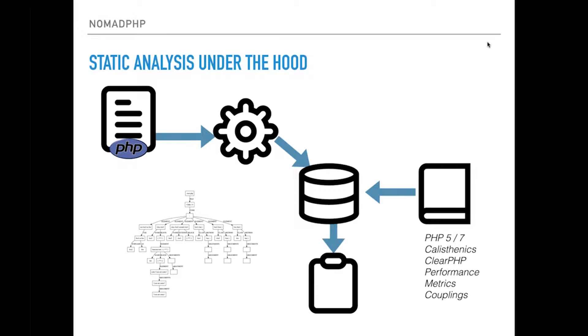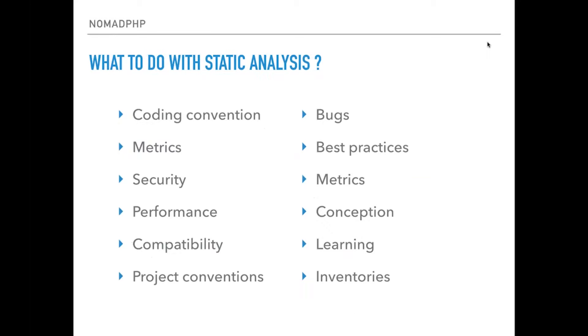So, instead of being so general, I suggest we take a look at a few of them, a few things you can do with static analysis. Coding conventions is probably the archetype of static analysis, because it just reads the code and tells you that you should put some spaces around the equal sign or not, or this function is too long.